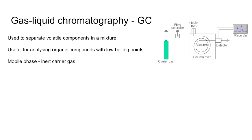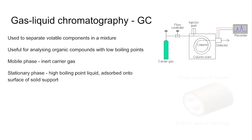The mobile phase is an inert carrier gas. The carrier gas carries the components through this very long tube called the column. The stationary phase is normally a high boiling point liquid, adsorbed onto the surface of a solid support. I'll show you a picture of what that looks like.